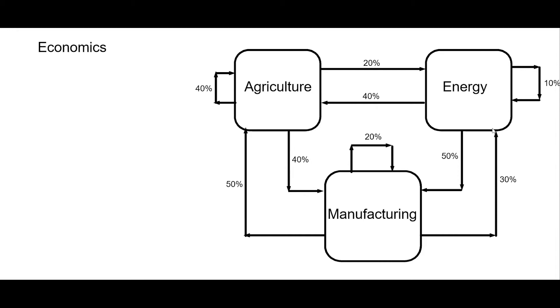And then finally manufacturing is outputting 50 to agriculture, 30 to energy, and it's keeping 20 percent. If you'll notice all of those outputs equal 100.